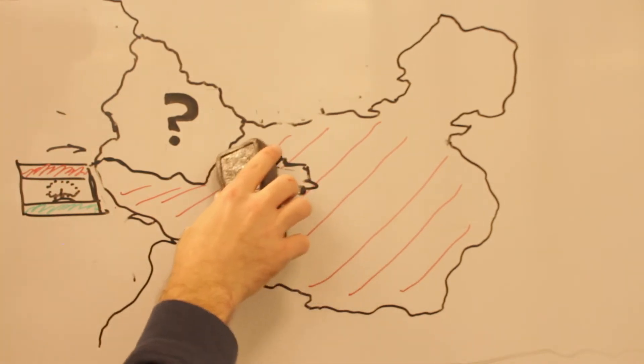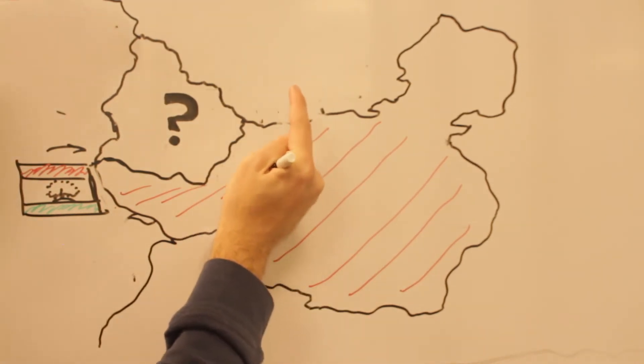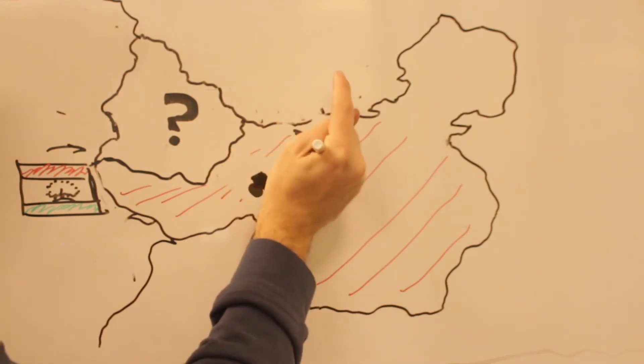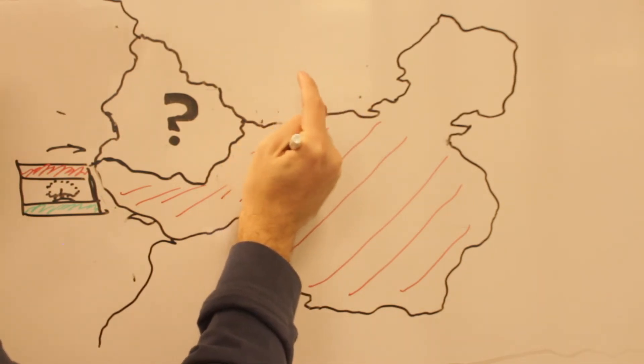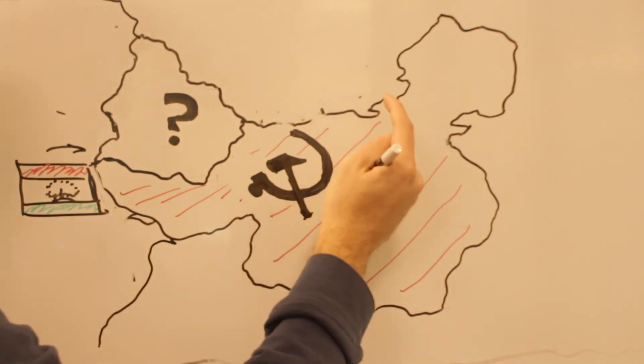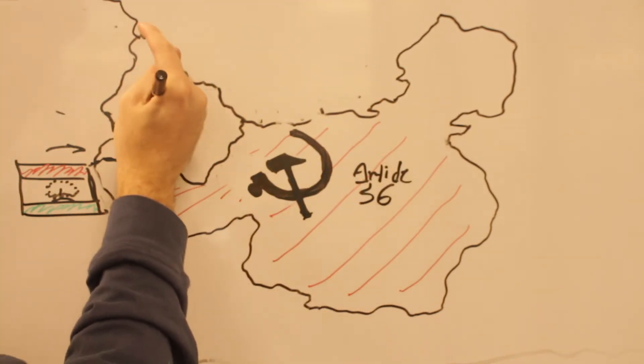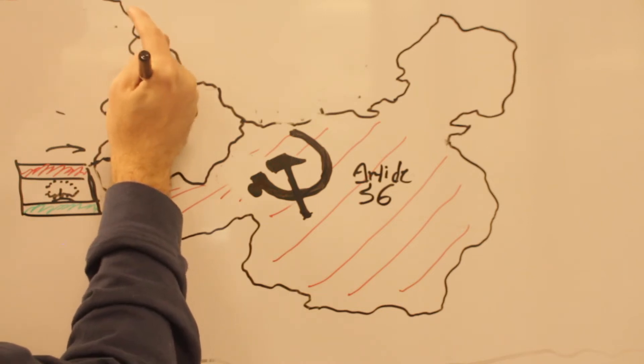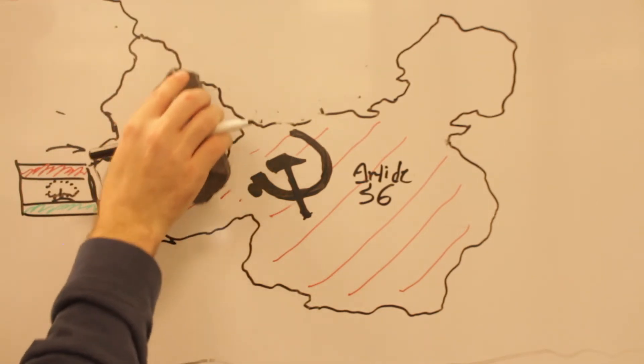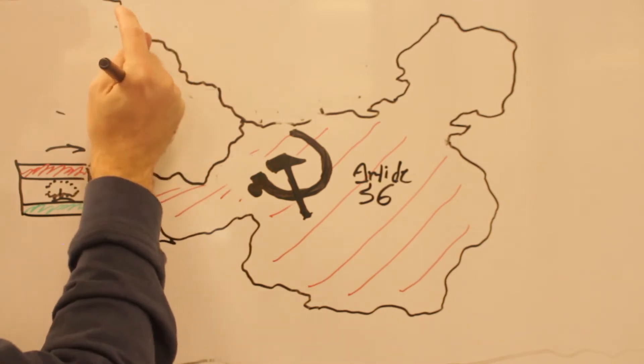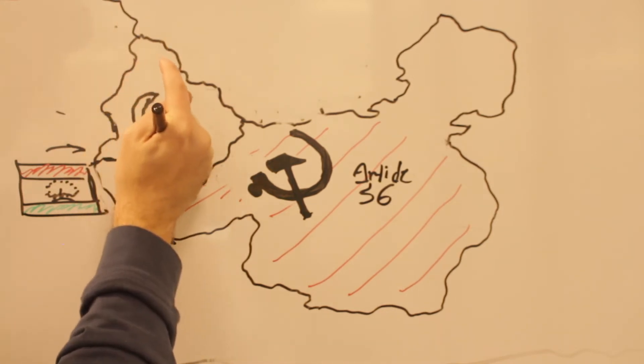To give a bit more background, Article 36 of the Chinese Constitution says that citizens enjoy freedom of religious belief. In February 2018, reforms were passed to allow state-registered religious organizations to possess property, publish literature, train and approve clergy, and collect donations. With reforms came heightened control.